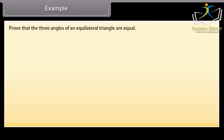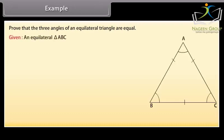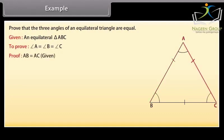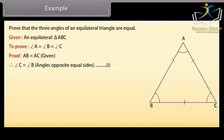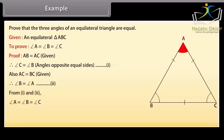Example: prove that the three angles of an equilateral triangle are equal. Given an equilateral triangle ABC, we have to prove that angle A is equal to angle B which equals angle C. Proof: AB is equal to AC (given), therefore angle C is equal to angle B because angles opposite equal sides are equal — mark it as 1. Also, AC is equal to BC (given), therefore angle B is equal to angle A — mark it as 2. From 1 and 2, angle A is equal to angle B which is equal to angle C. Hence, the result.